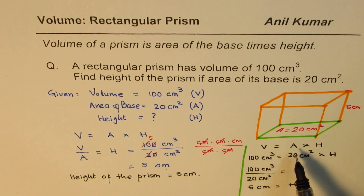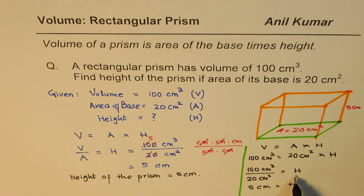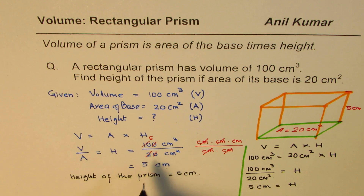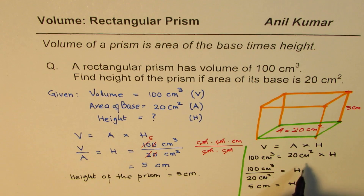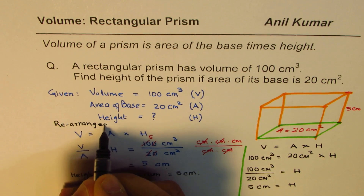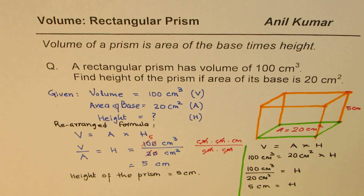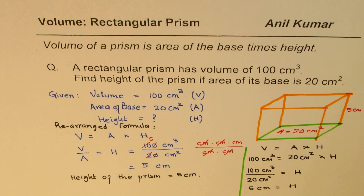So you could sketch, write volume as area times height, substitute the given values, then divide to get the unknown height. In the first method we rearranged the formula; in the second method we rearranged the values after substituting. Both are correct methods — adopt the one which you like. I am Anil Kumar and I hope that helps you understand the concept. You can always share and subscribe to my videos. Thank you and all the best.